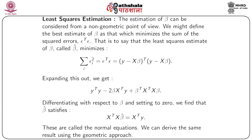The general technique of minimizing the least square error is to differentiate the above expression with respect to β and set it to zero — a common practice when finding the minimum of any function. Using this technique, we find that β̂ must satisfy the equation X'Xβ̂ = X'y. These are called the normal equations, and the same result can also be derived using the geometric approach.